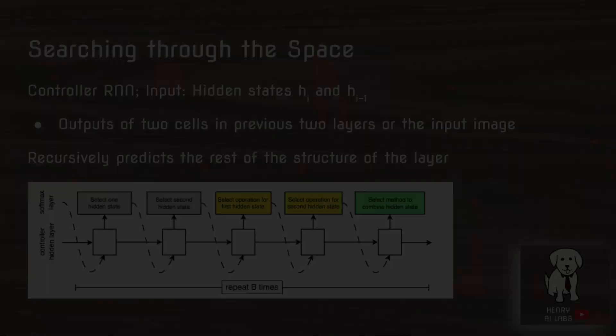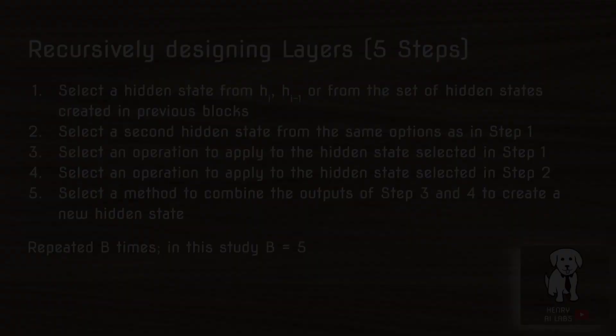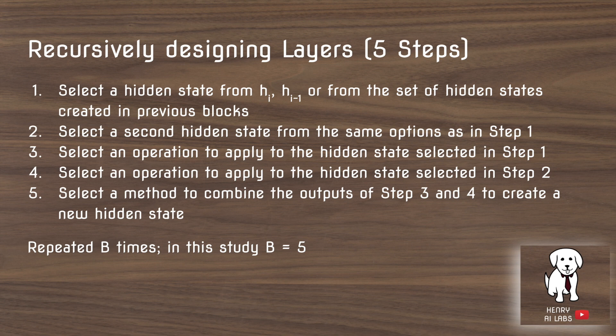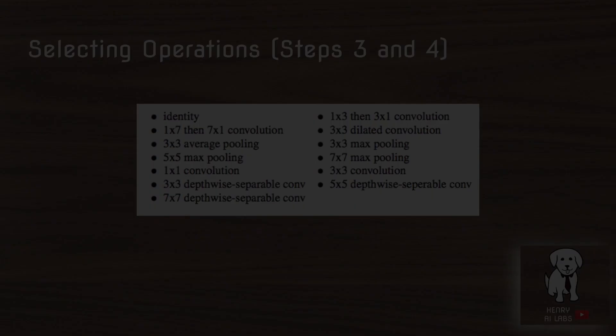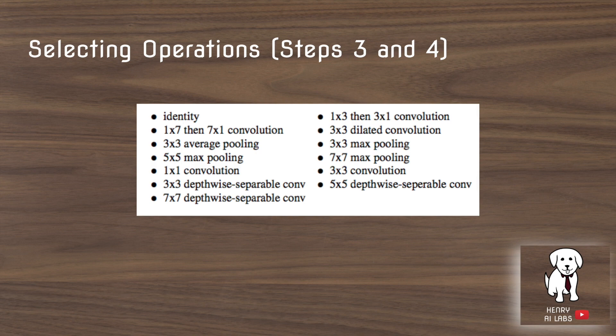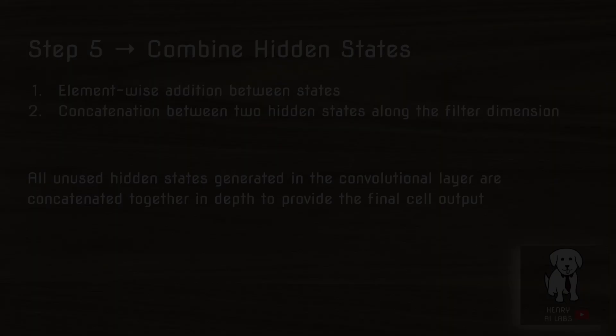The controller makes five steps in its recurrent prediction: it selects a hidden state, then selects another hidden state in the layer. These hidden states are essentially feature maps. It then selects an operation to apply to each of the hidden states. The available operations include a 1x1 convolution, a 3x3 convolution, max pooling, and other discrete operations from the search space.